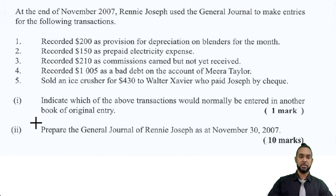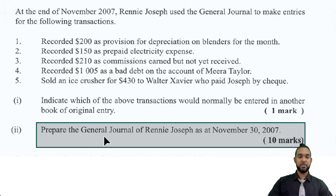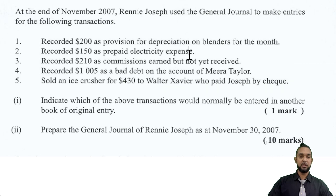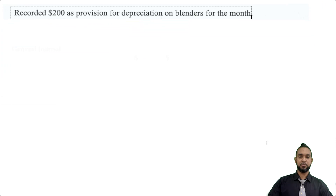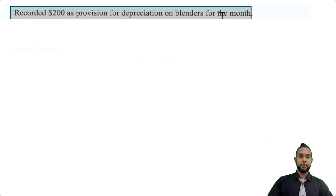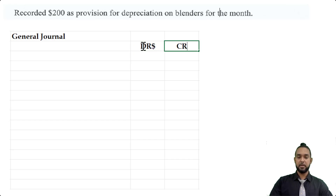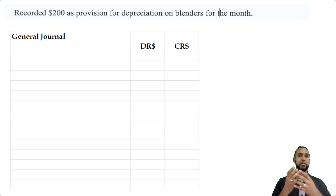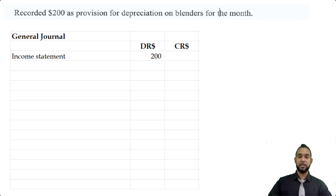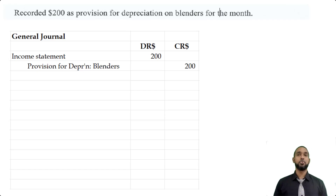Now let's prepare the general journal of Rennie Joseph as at November 30th, 2007 — 10 marks. So they want us to record these five transactions in the general journal. The first is to record $200 provision for depreciation on blenders. These are adjusting entries. The conventional way for CSEC is to debit the income statement and credit the provision for depreciation account. The other way is to debit the depreciation expense account and credit the provision for depreciation — blenders. Item two: we recorded $150 as prepaid electricity expense, so we debit prepaid electricity because prepaid expenses are assets and assets increase with debits, and credit the electricity expense account to remove the prepaid amount.